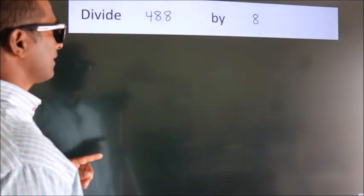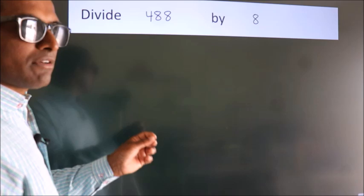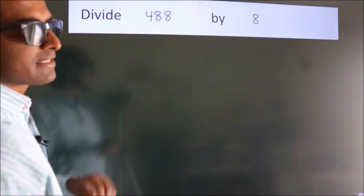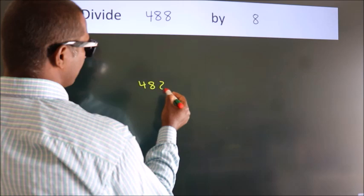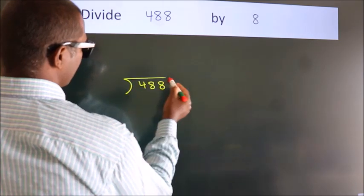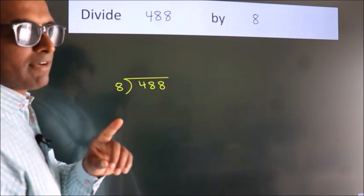Divide 488 by 8. To do this division, we should frame it in this way: 488 here, 8 here. This is step 1.